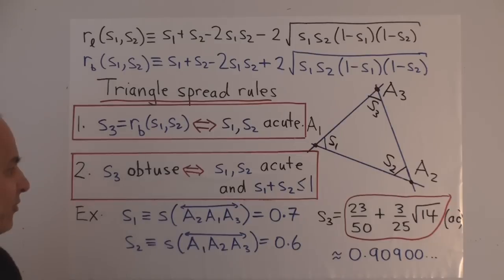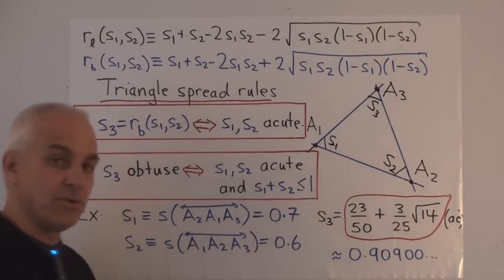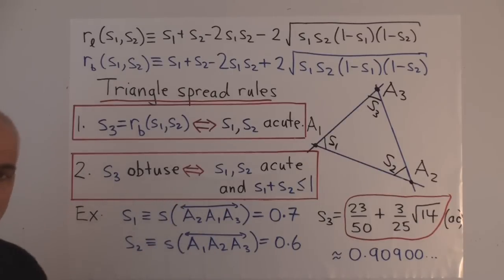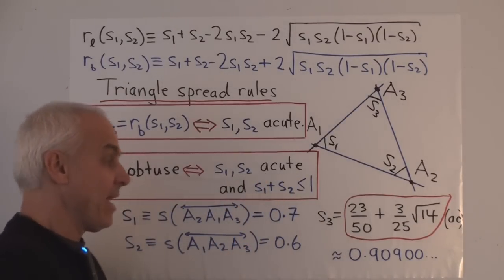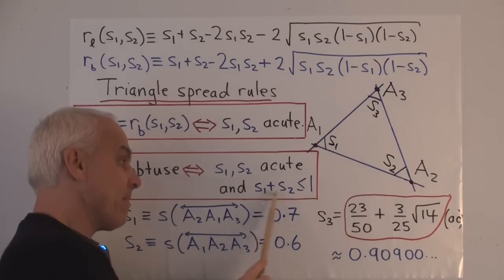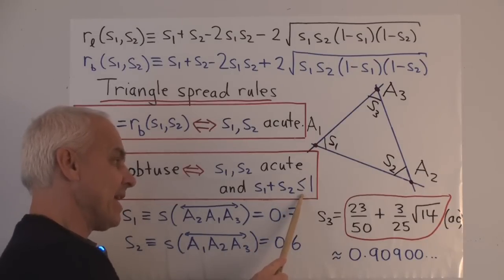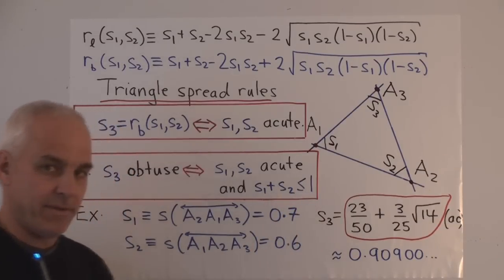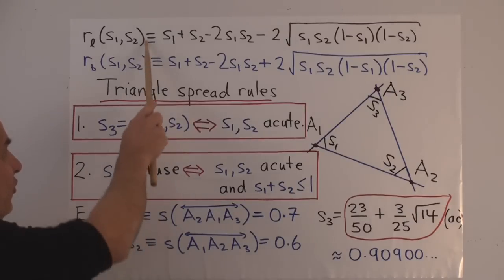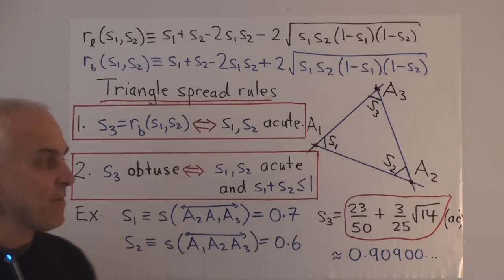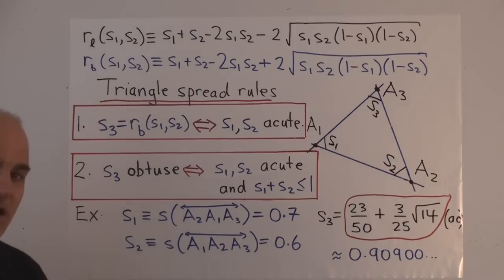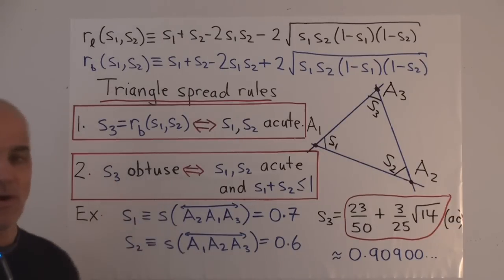The second triangle spread rule tells us that the S3 sector will be obtuse precisely when two conditions hold: first, S1 and S2 are both acute; and second, the sum S1 plus S2 is less than or equal to 1. So the first rule tells us which of the two solutions to the triple spread formula to take, and the second rule tells us whether S3 is going to be obtuse or acute.